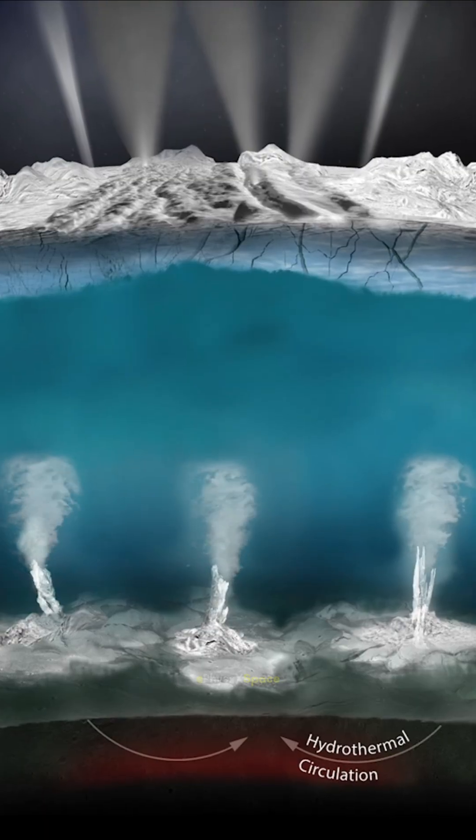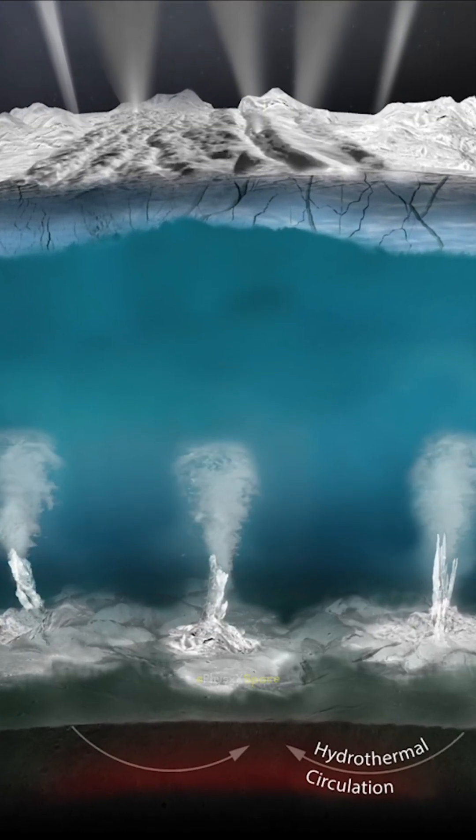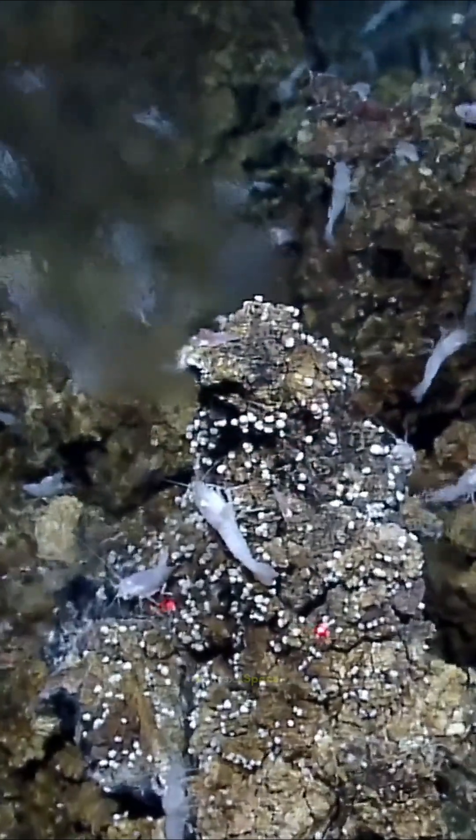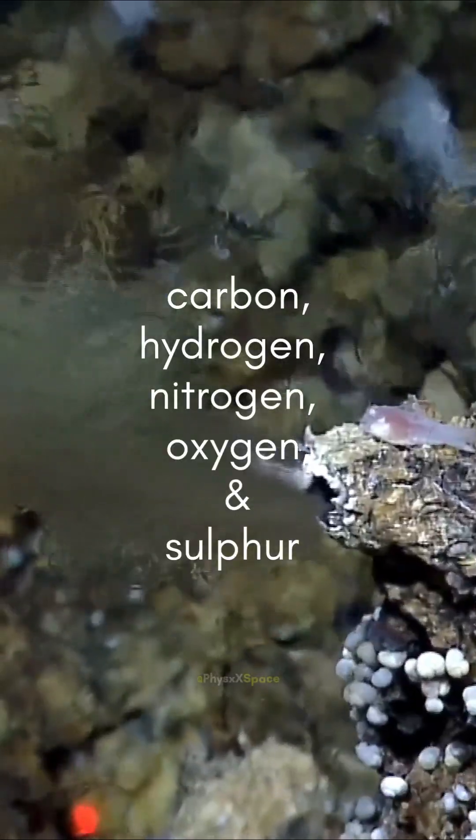Enceladus, you know that moon with a massive ocean hidden beneath its icy crust. Well, turns out they had already found five other crucial elements for life there.